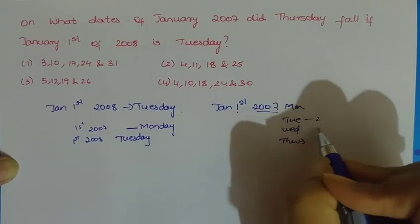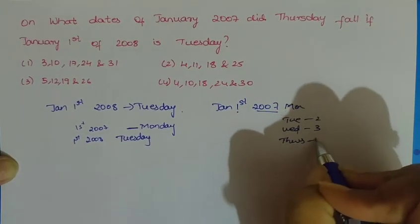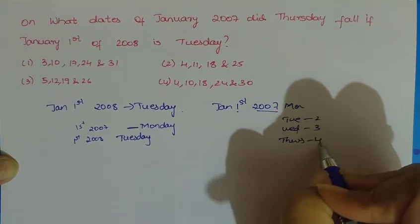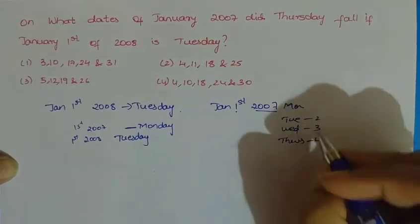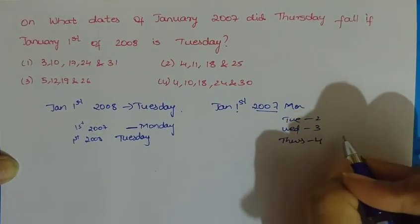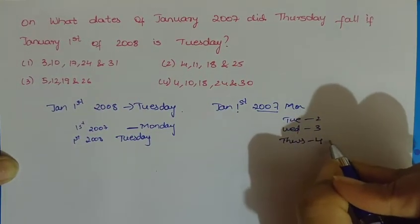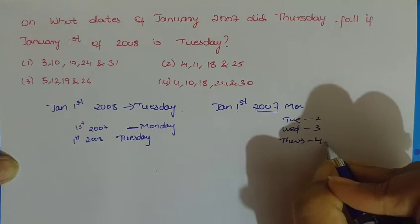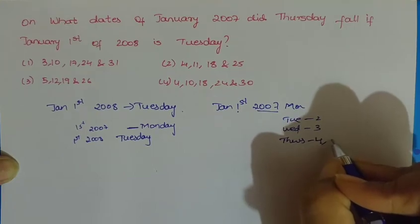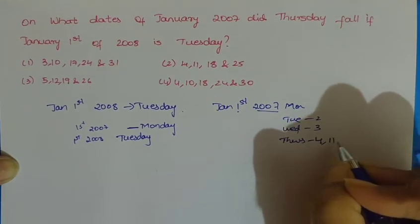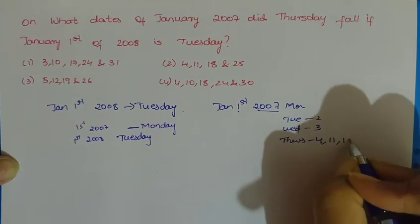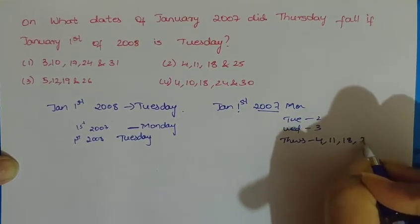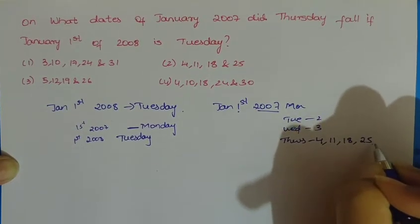So the 4th will be Thursday. Then 4 plus 7 is 11, so 11th is Thursday. Next, 11 plus 7: 18th is Thursday. And 18 plus 7: 25th is Thursday. So the Thursdays in January 2007 fall on the 4th, 11th, 18th, and 25th.